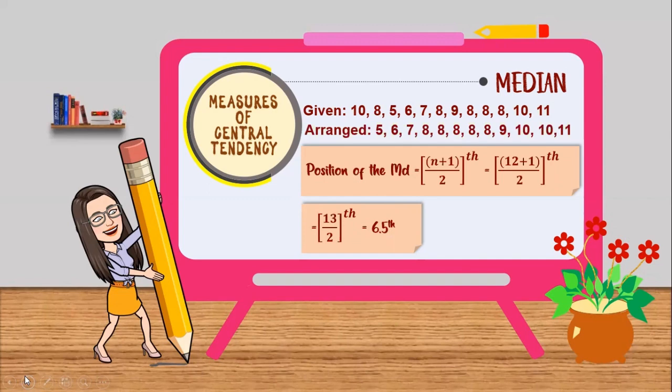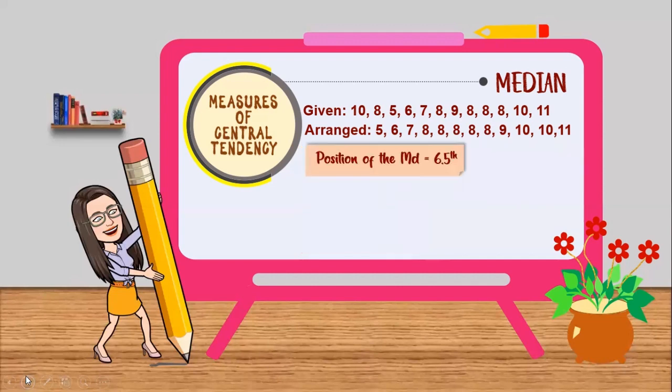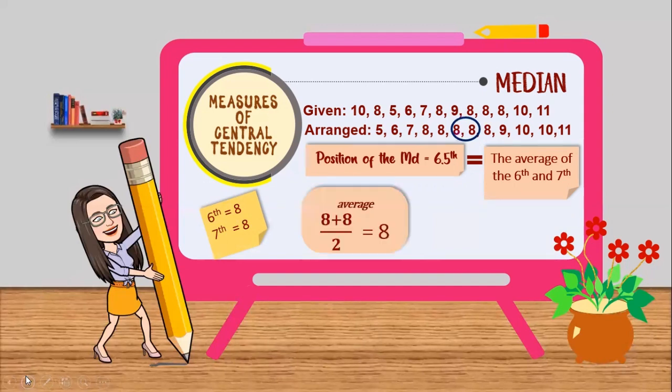If we look at the given values, we cannot see the 6.5 position. What are we going to do is to get the average of the sixth and seventh data. The sixth value is 8 and the seventh value is 8. So get the average. 8 plus 8 over 2 is equal to 8. Therefore, the median is 8.